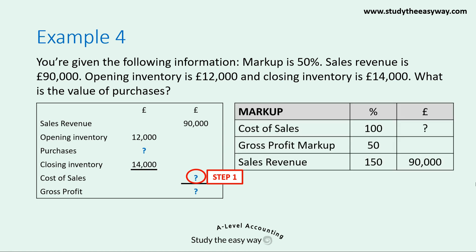Step one: it's a markup question, so we start with cost of sales as 100. We add the gross profit markup of 50, giving sales revenue represented by 150 percentage points. The known figure is sales revenue of £90,000, with a question mark next to cost of sales. Calculating the missing cost of sales: take £90,000, divide by 150, then multiply by 100. This gives a cost of sales figure of £60,000.